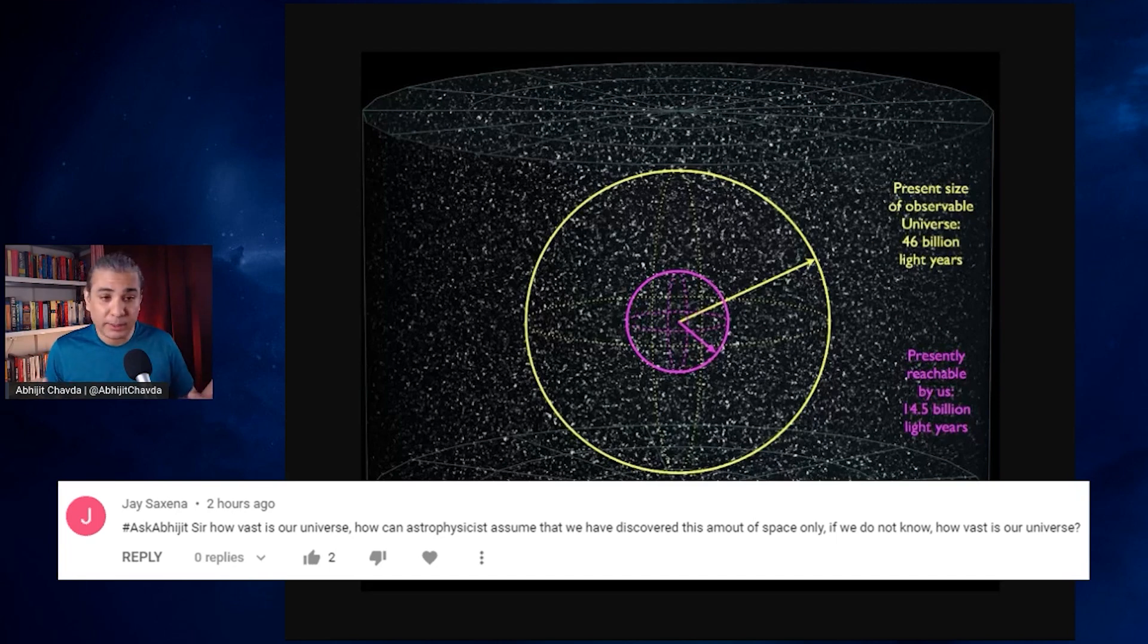We can calculate the distance using techniques such as redshift, in which its wavelength gets stretched out as it travels because of the expansion of space-time. So we can calculate how far away a certain object is based on the redshift that we see in the light spectra from that object, for example, a distant galaxy.